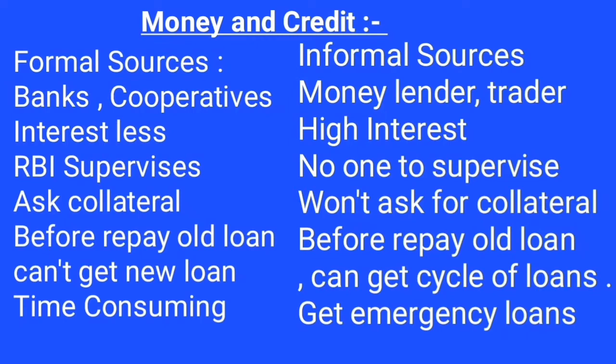The next question is the difference between formal sources of credit and informal sources of credit. Formal sources include banks and cooperatives, while informal sources include money lenders, traders, businessmen, and relatives. Banks and cooperatives give loans with reasonable interest, but informal sources charge very high interest rates. RBI supervises formal sources, whereas no one supervises the informal sector. Banks ask for collateral; informal sources do not.